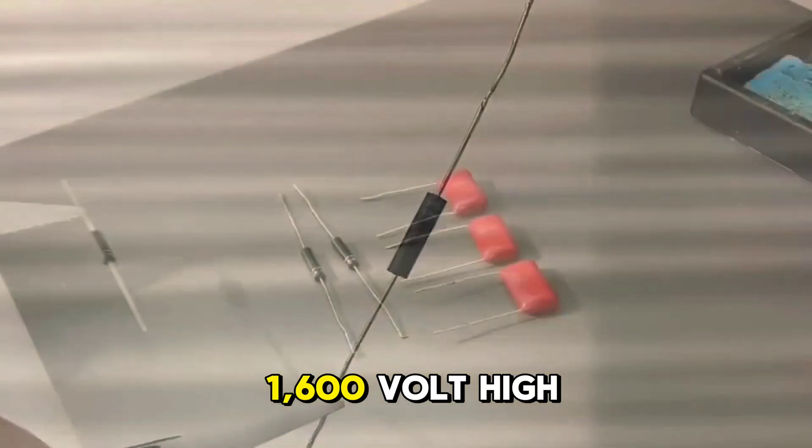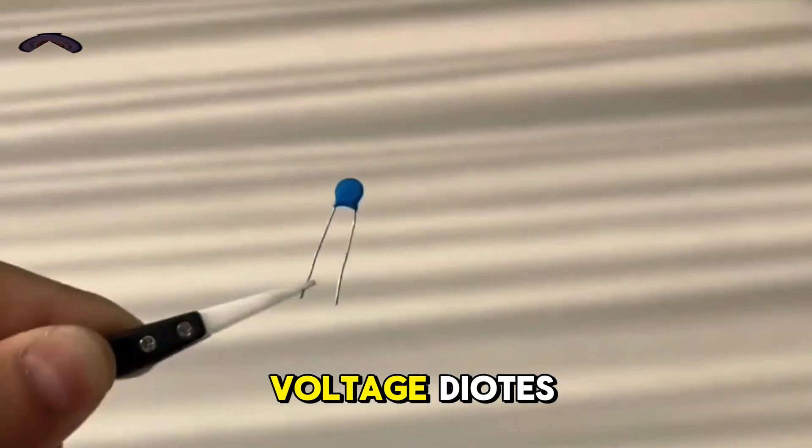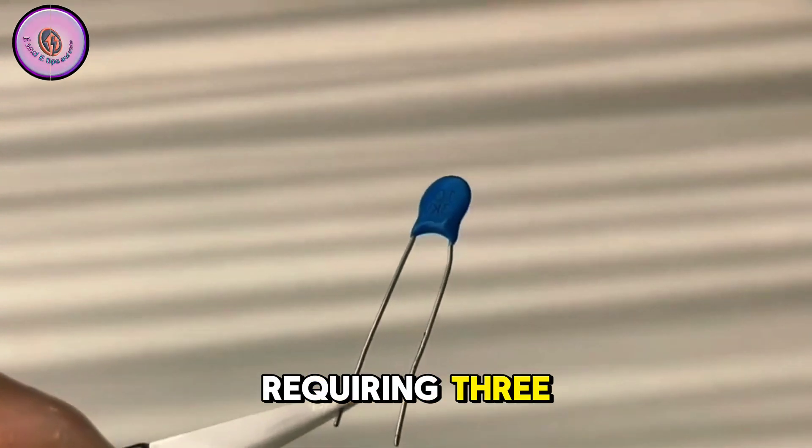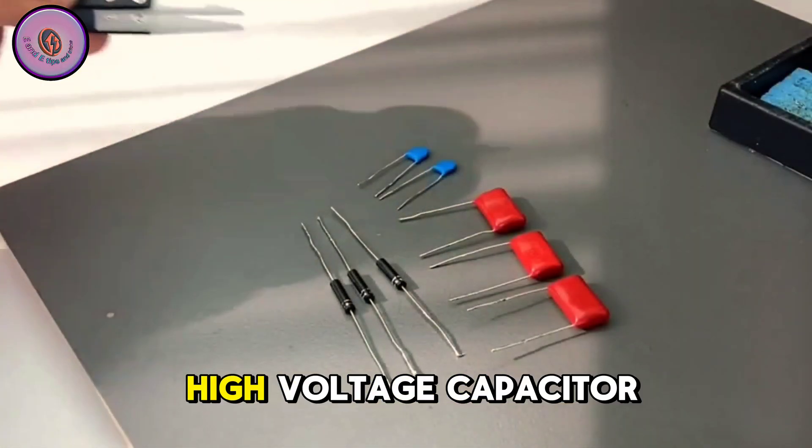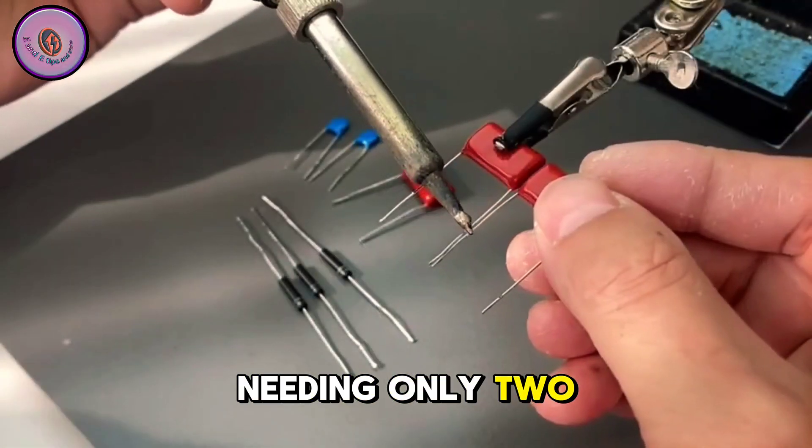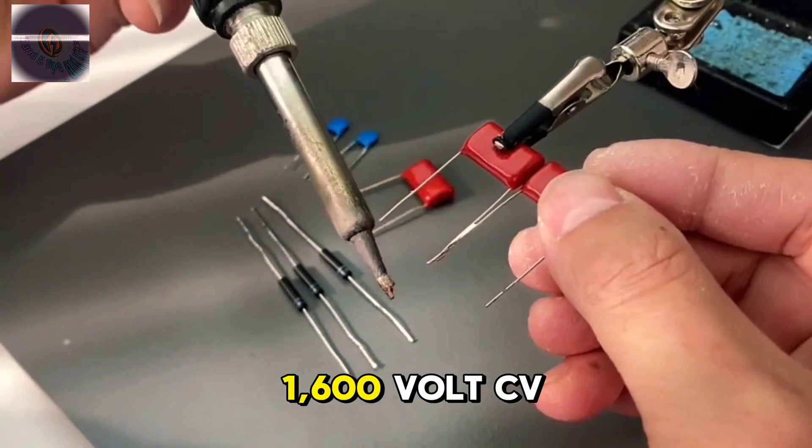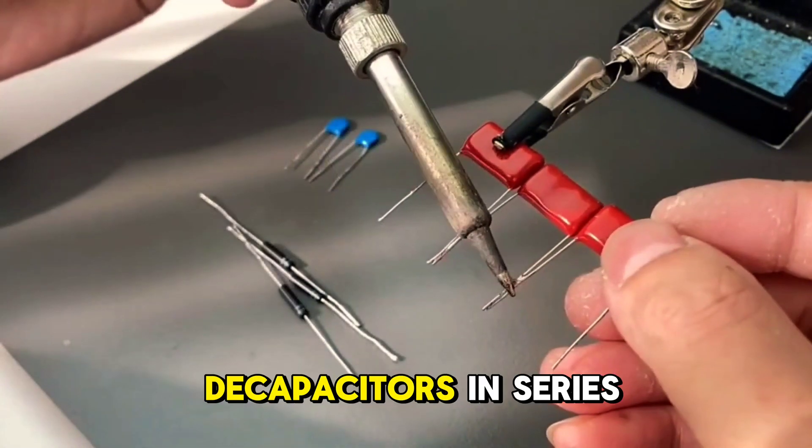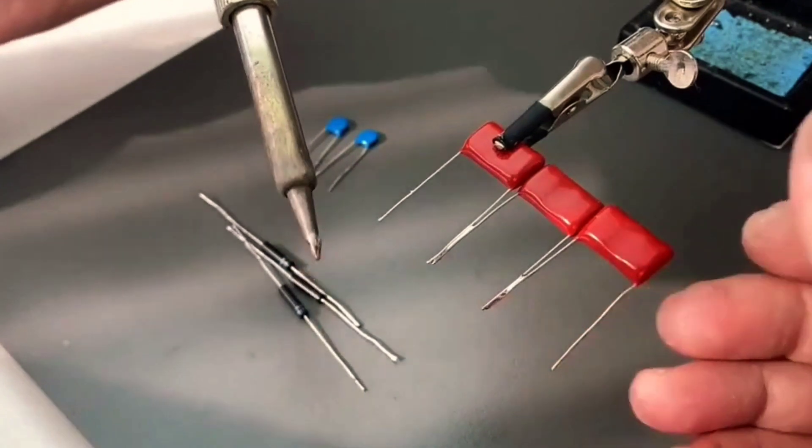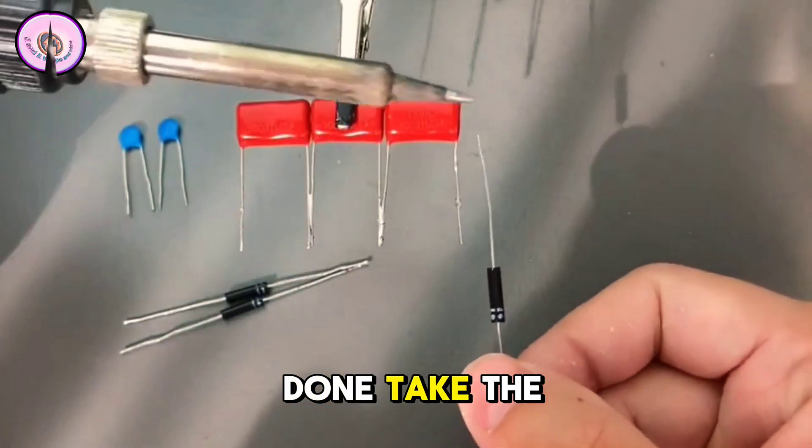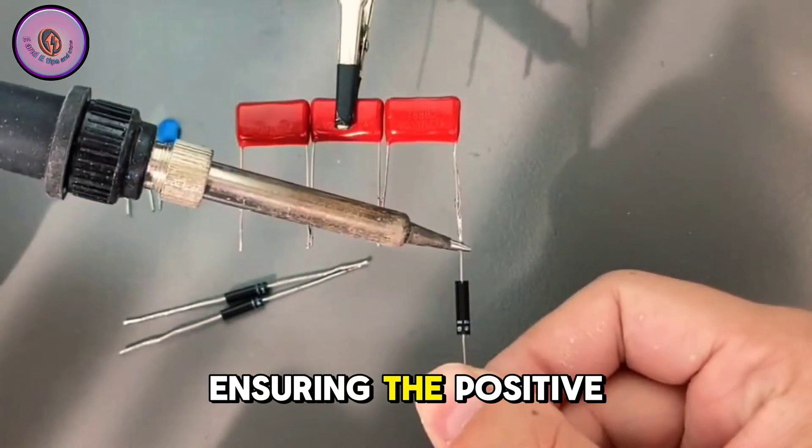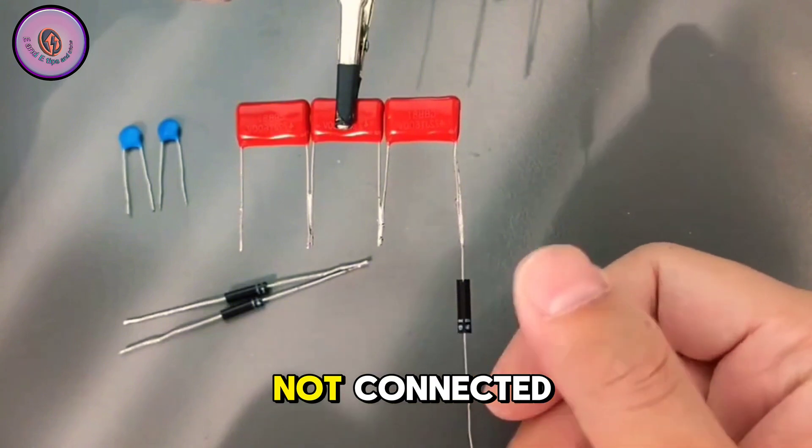Prepare a total of three 4.7 nanofarad 1600 volt CBB capacitors for storing and discharging. Next are the 1600 volt high voltage diodes, requiring three, and a 3000 volt magnetic sheet high voltage capacitor, needing only two. We connected three 1600 volt CBB capacitors in series.